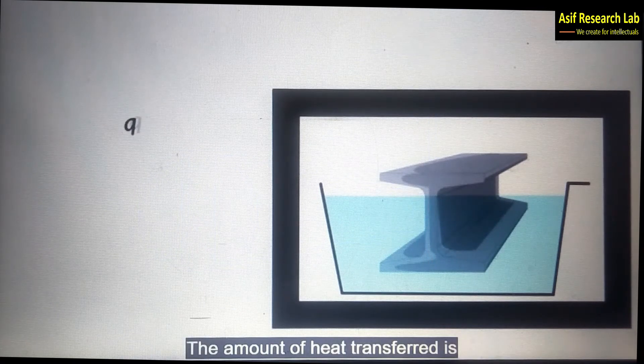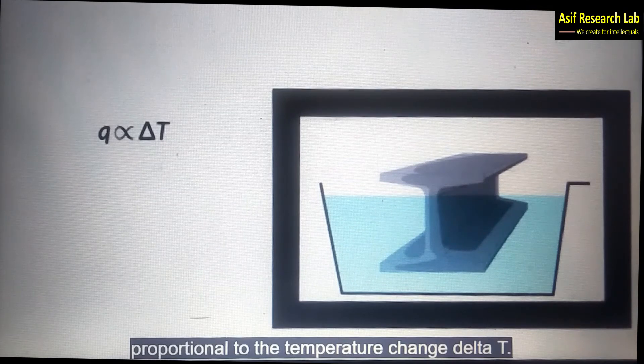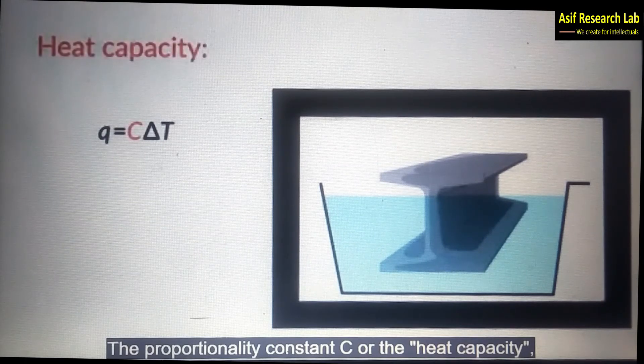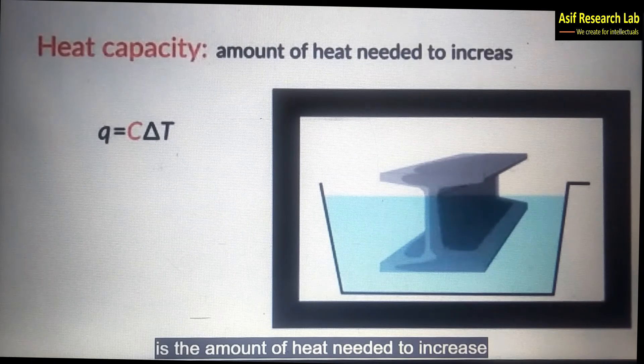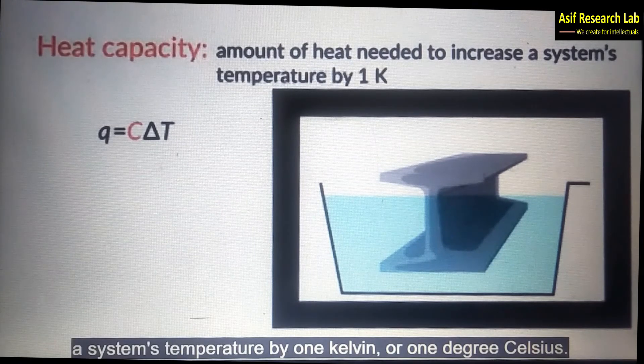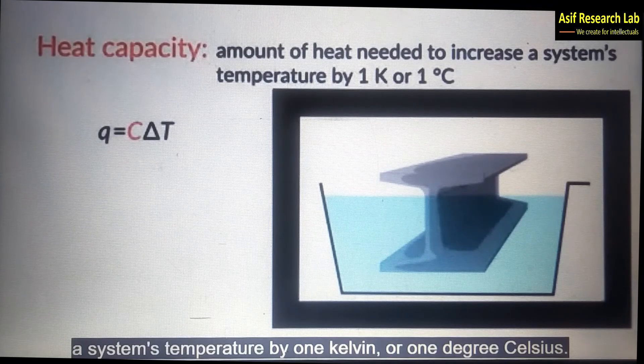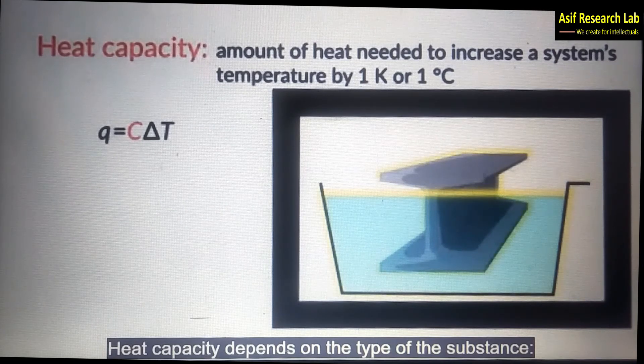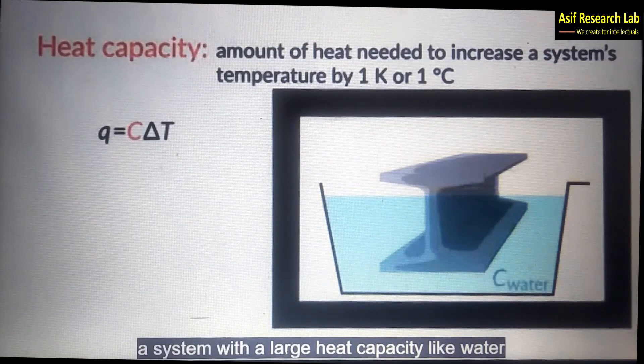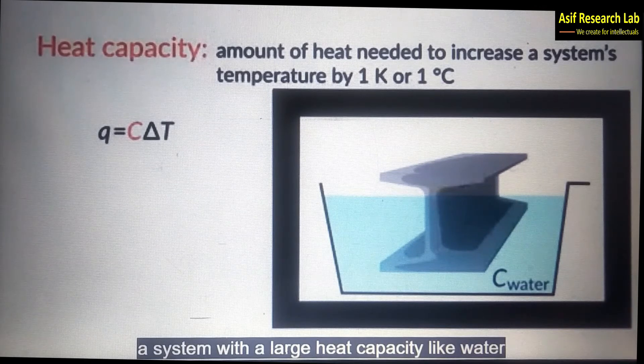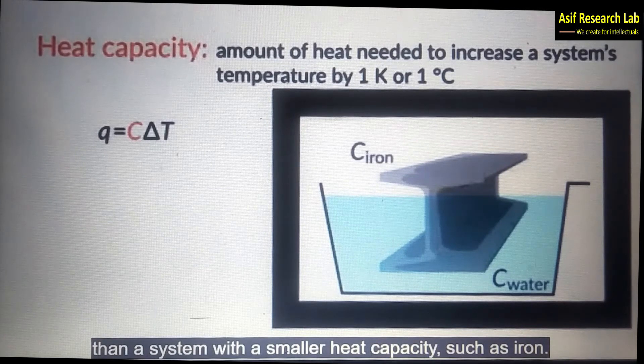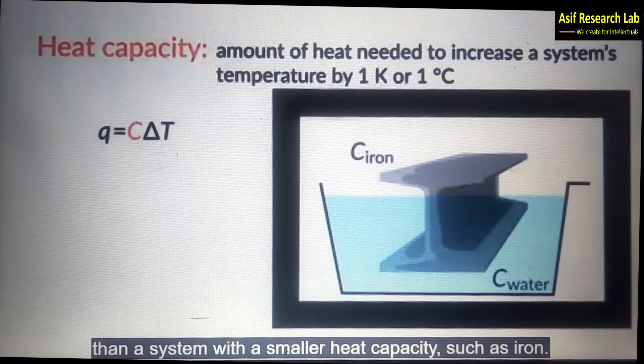The amount of heat transferred is proportional to the temperature change delta T. The proportionality constant C or the heat capacity is the amount of heat needed to increase a system's temperature by 1 Kelvin or by 1 degree Celsius. Heat capacity depends on the type of the substance. A system with a large heat capacity like water needs to absorb more heat to raise its temperature than a system with a small heat capacity such as iron.